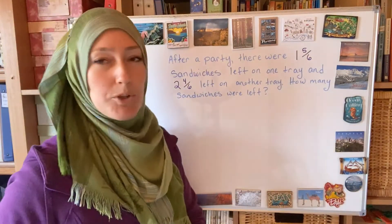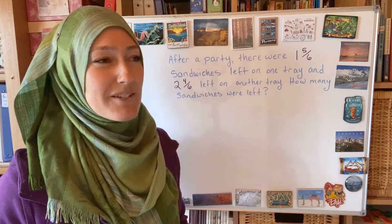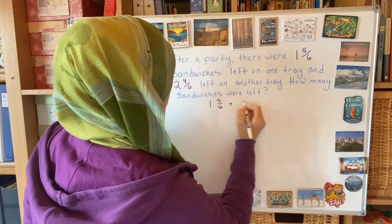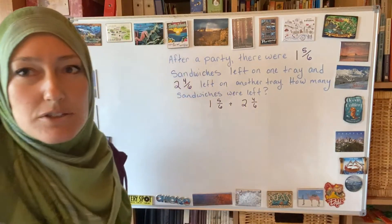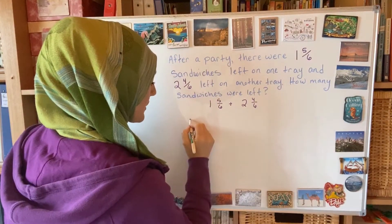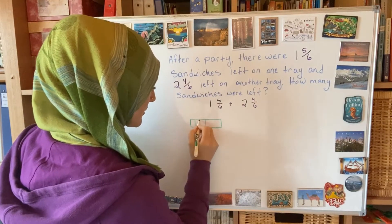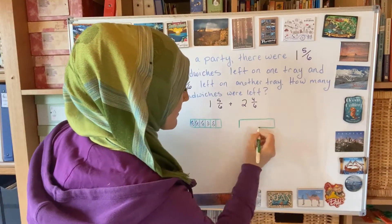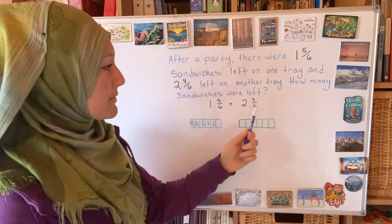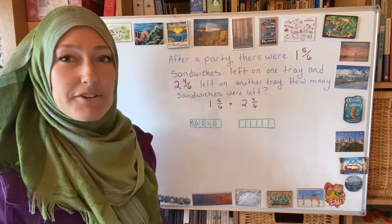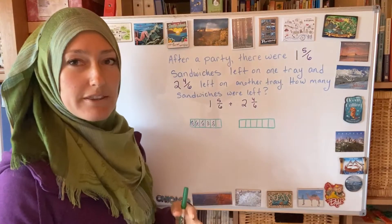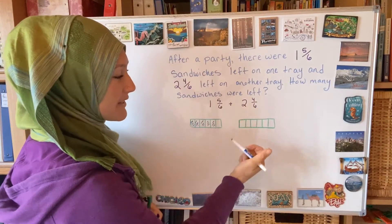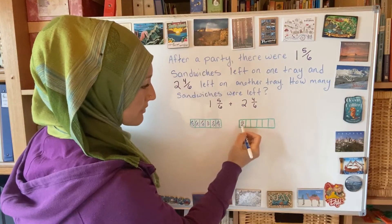You will get to a point where you do it without a model, but to start with, you want to know how the model works. We will be having 1 and 5 sixths plus 2 and 4 sixths. One step is to model the fraction part first. Here is 1 — that would be 5 out of 6. I need to add this other fraction, 4 out of 6. It may be helpful to add on here and put the leftover here. So I put 1, 2, 3, and 4.